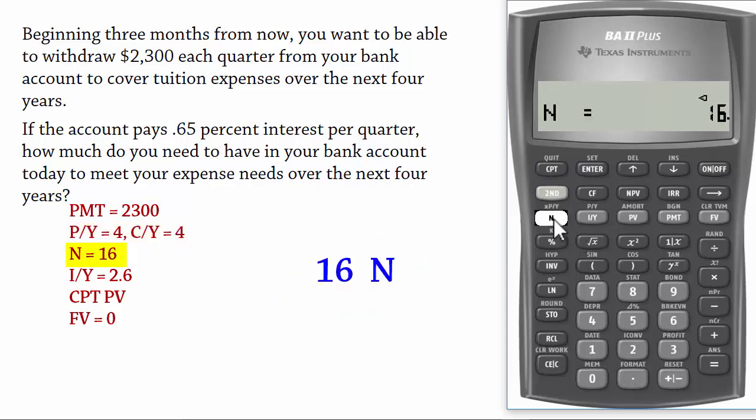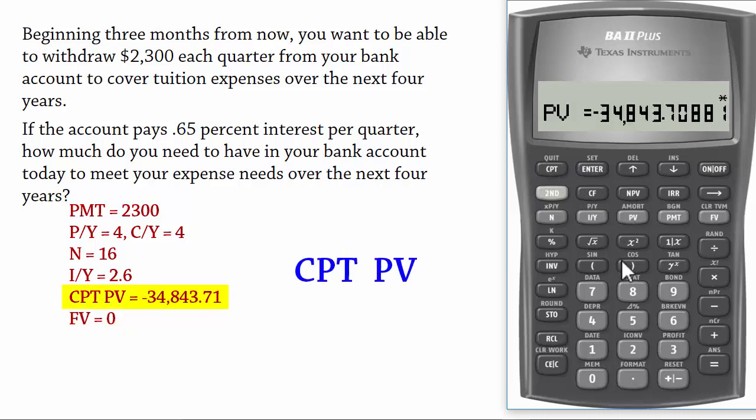16 N, number of payments, 2.6, I/Y, interest rate per year, 2,300, payment, 0, future value, and then compute present value.